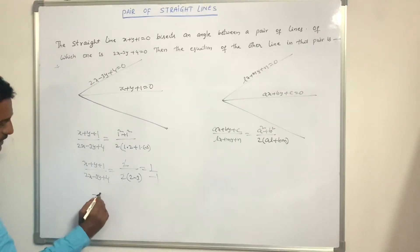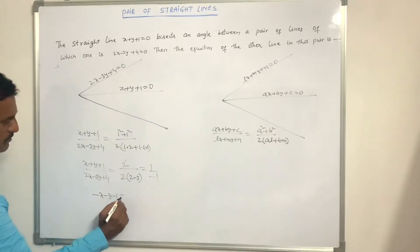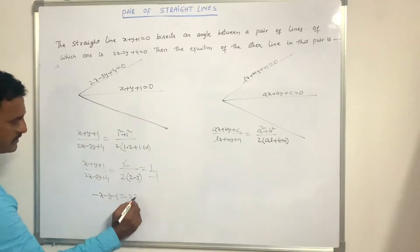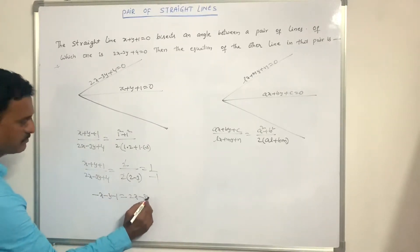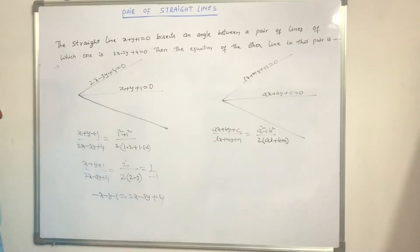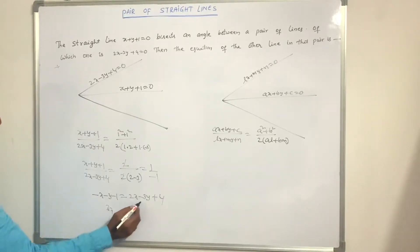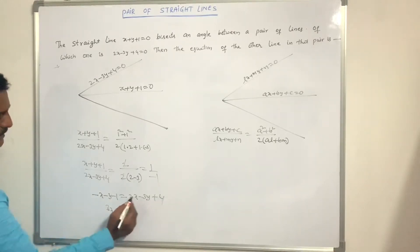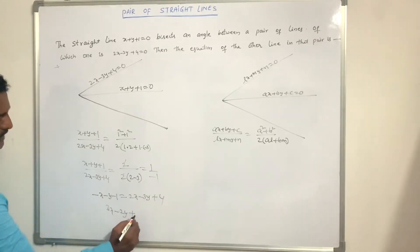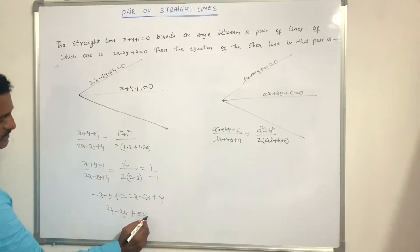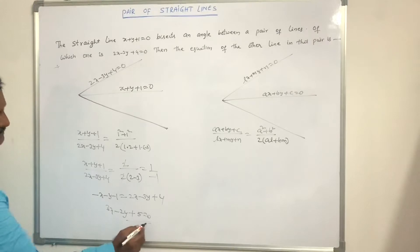Taking cross multiplication: minus x minus y minus 1 equals 2x minus 3y + 4. Rearranging: 2x + x minus 3y + y + 4 + 1 = 0, that is 3x minus 2y + 5 = 0. This is the answer.